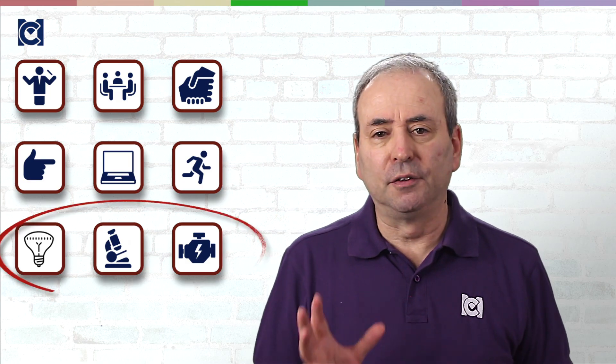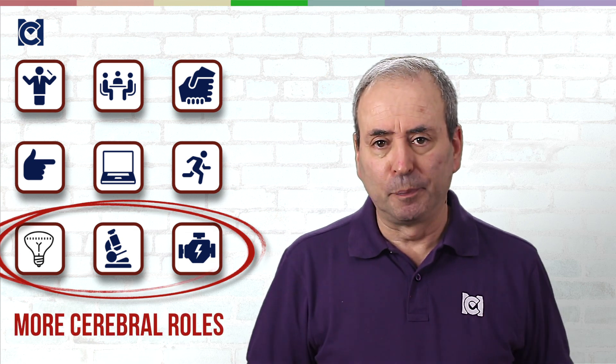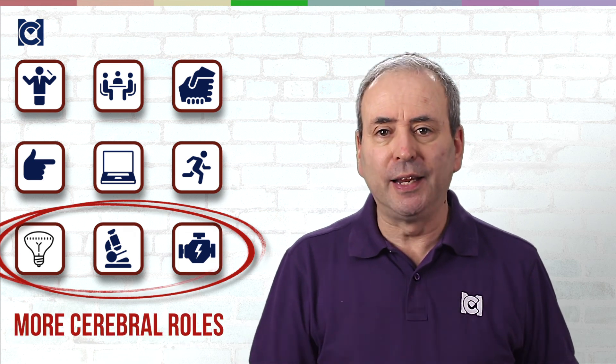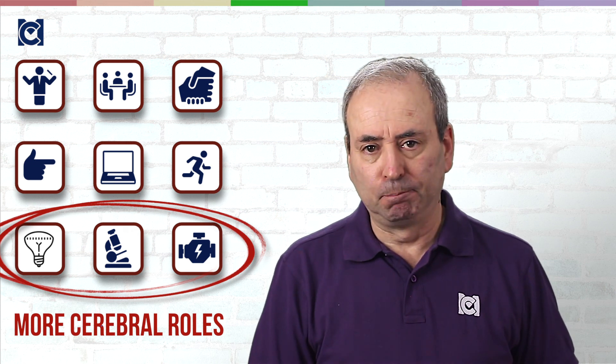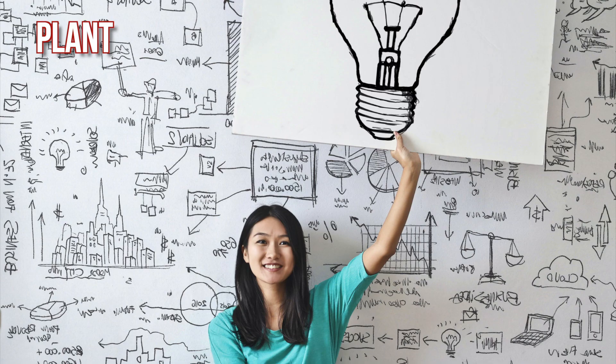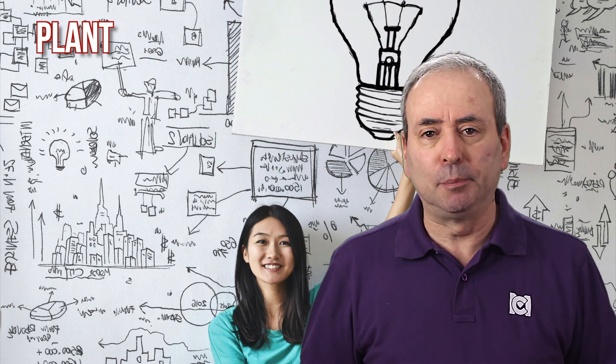The final set of three roles are more cerebral and they focus more on thinking than doing or on relationships. The first of these is the Plant. This is the ideas person.